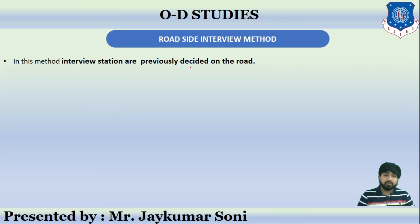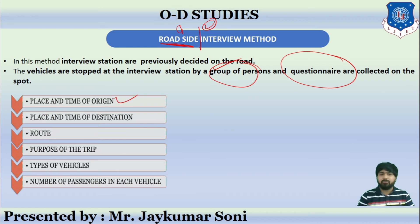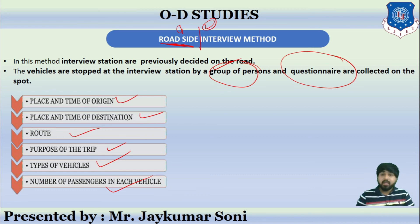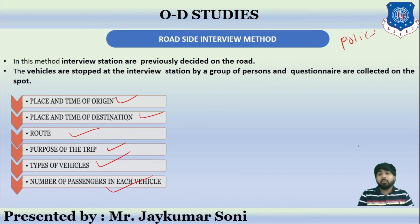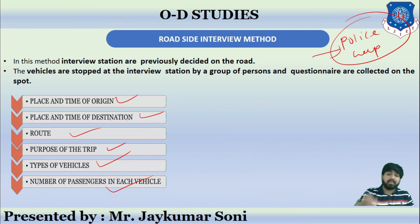Then comes the roadside interview method. There are two things: roadside and interview. In this method, interview stations are decided on the road. Then the vehicles are stopped at the particular side of the road by a group of persons and they are asked questions with the help of a questionnaire. They will be asked about the place and time of origin, the road, the time of destination, the purpose of the trip, type of vehicle, and number of passengers travelling in the particular vehicle. Many times, the help of police is also taken because there may be chances of conflicts between the interviewers and the persons travelling, who may not be interested in answering all the questions.